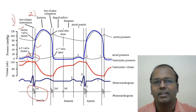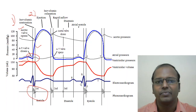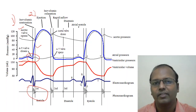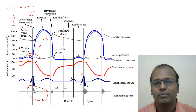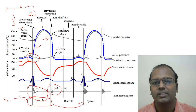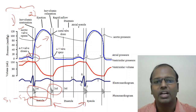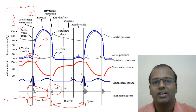After the ejection phase, when aortic blood pressure exceeds ventricular pressure, the aortic valve closes. This is followed by the isovolumetric relaxation phase. During semilunar valve closure — both aortic and pulmonary valves — the second heart sound is produced. The phase between S1 and S2 is systole; the phase between S2 and the next S1 is diastole. S2 is contributed by closure of the aortic and pulmonary (semilunar) valves.